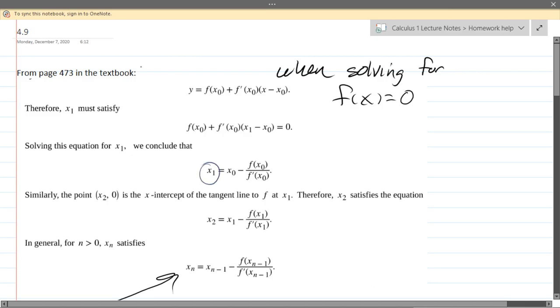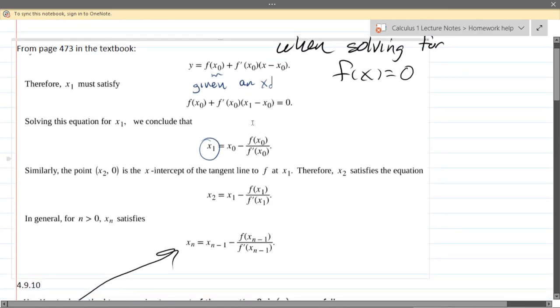So I misspoke earlier. You're supposed to be given an x0. If you need to get a better approximation, you're going to do the same thing, except your original x value is going to be replaced by your slightly better x value, x1.